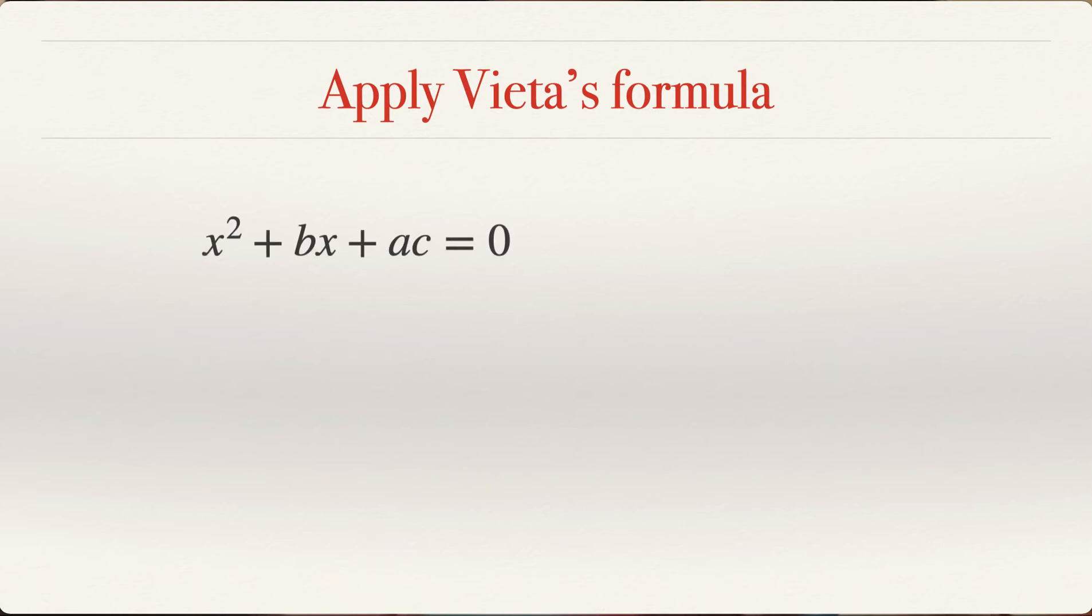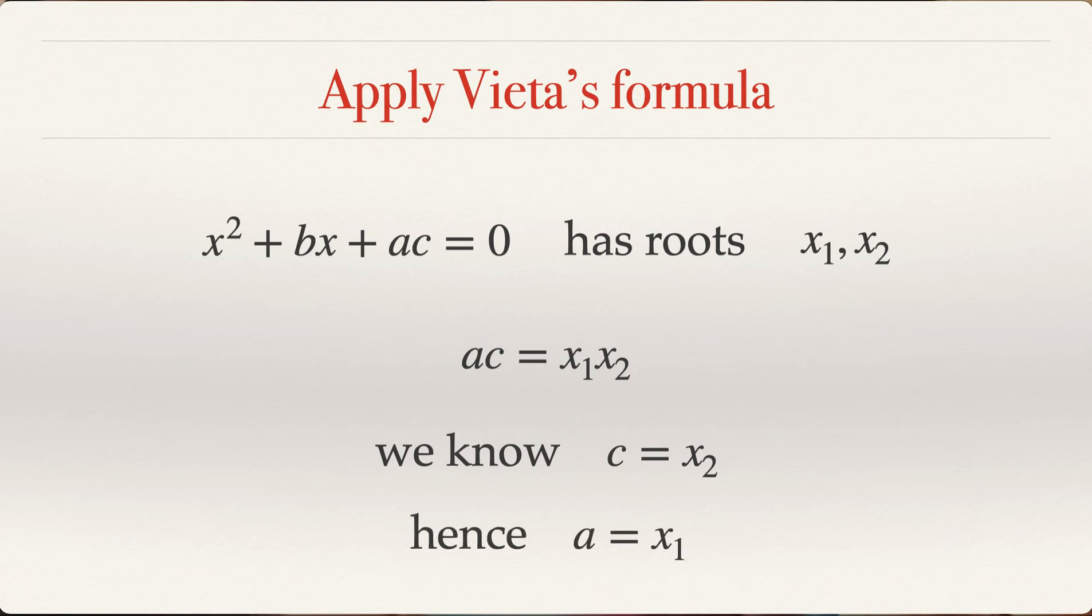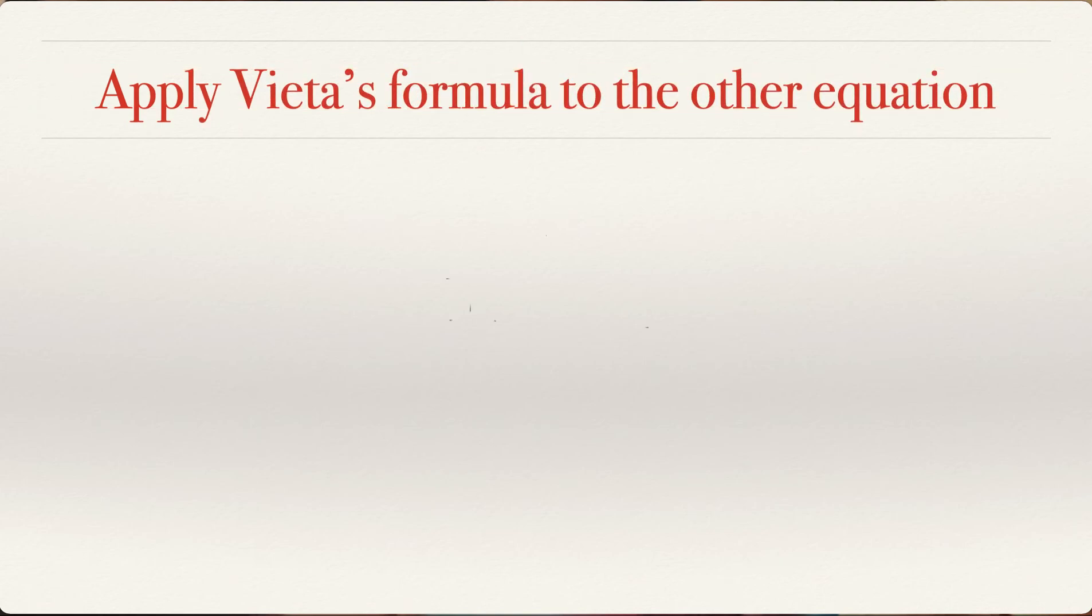Let's look at this expression one more time: x squared plus bx plus ac equal to zero. We know that it has roots x1 and x2. So the product of roots, that is x1 times x2 is equal to ac. That's by Vieta's formula. We already know that c is equal to x2. So clearly, a is equal to x1. c is equal to x2. We just cancel off the c. So a is equal to x1.